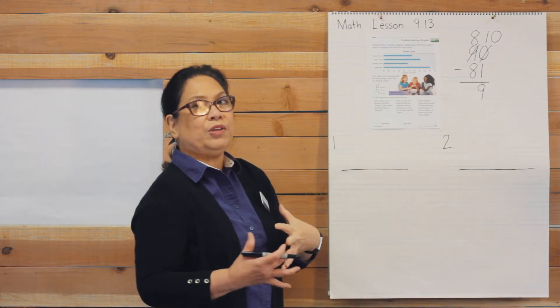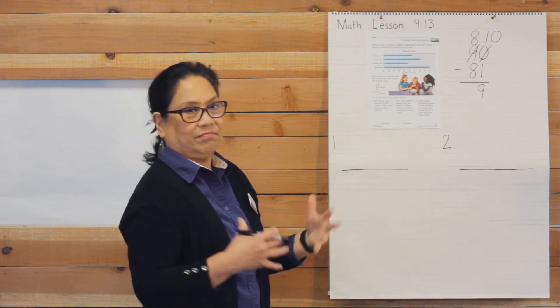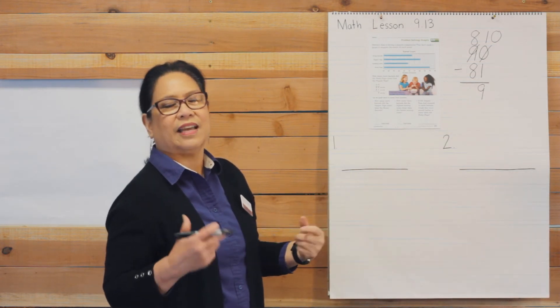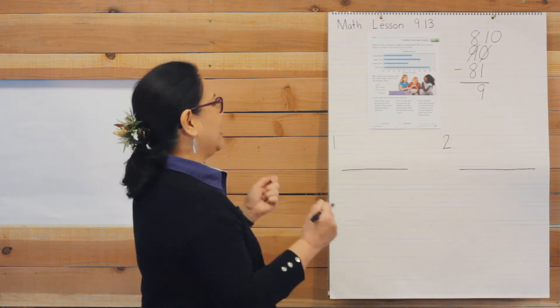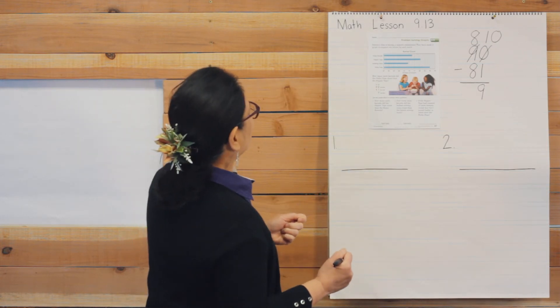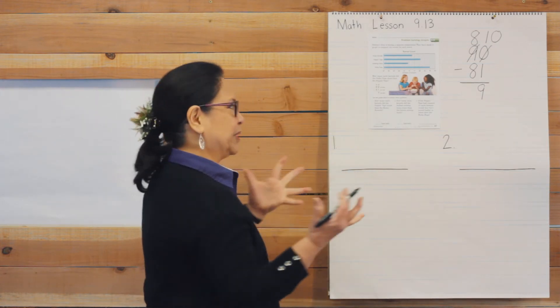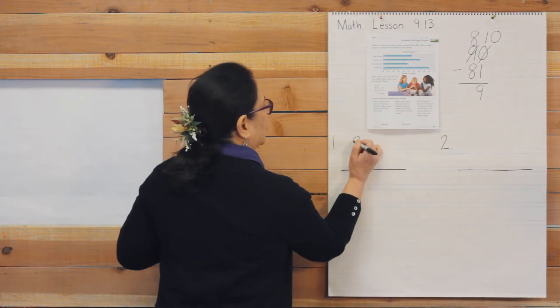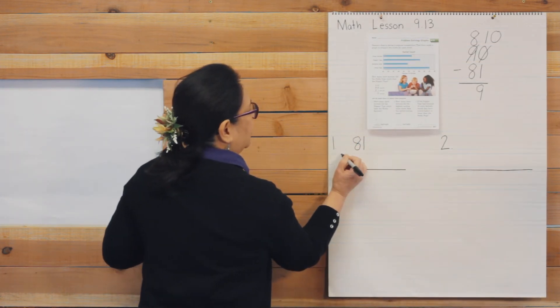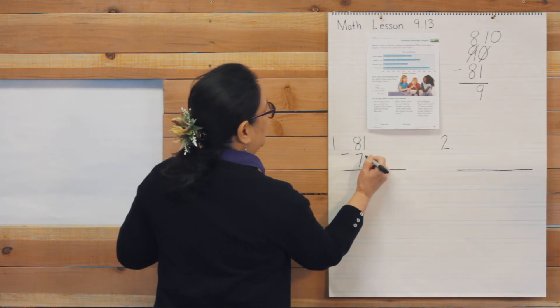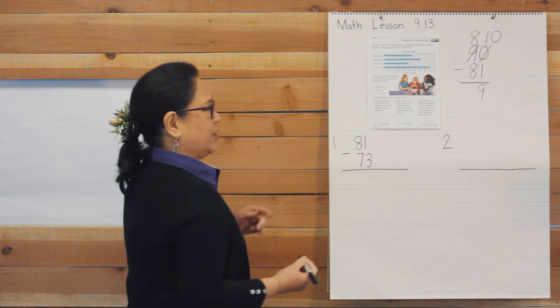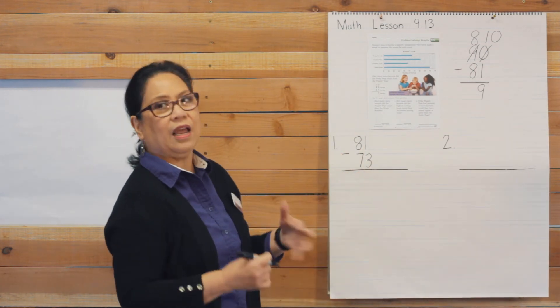So when we use the words more than, what do we use? Take away is correct. And we always start with a bigger number. 81, 81 and 73. 81 is bigger. So we start with 81. And we did say that it is take away 73. Can we do one take away three? No.